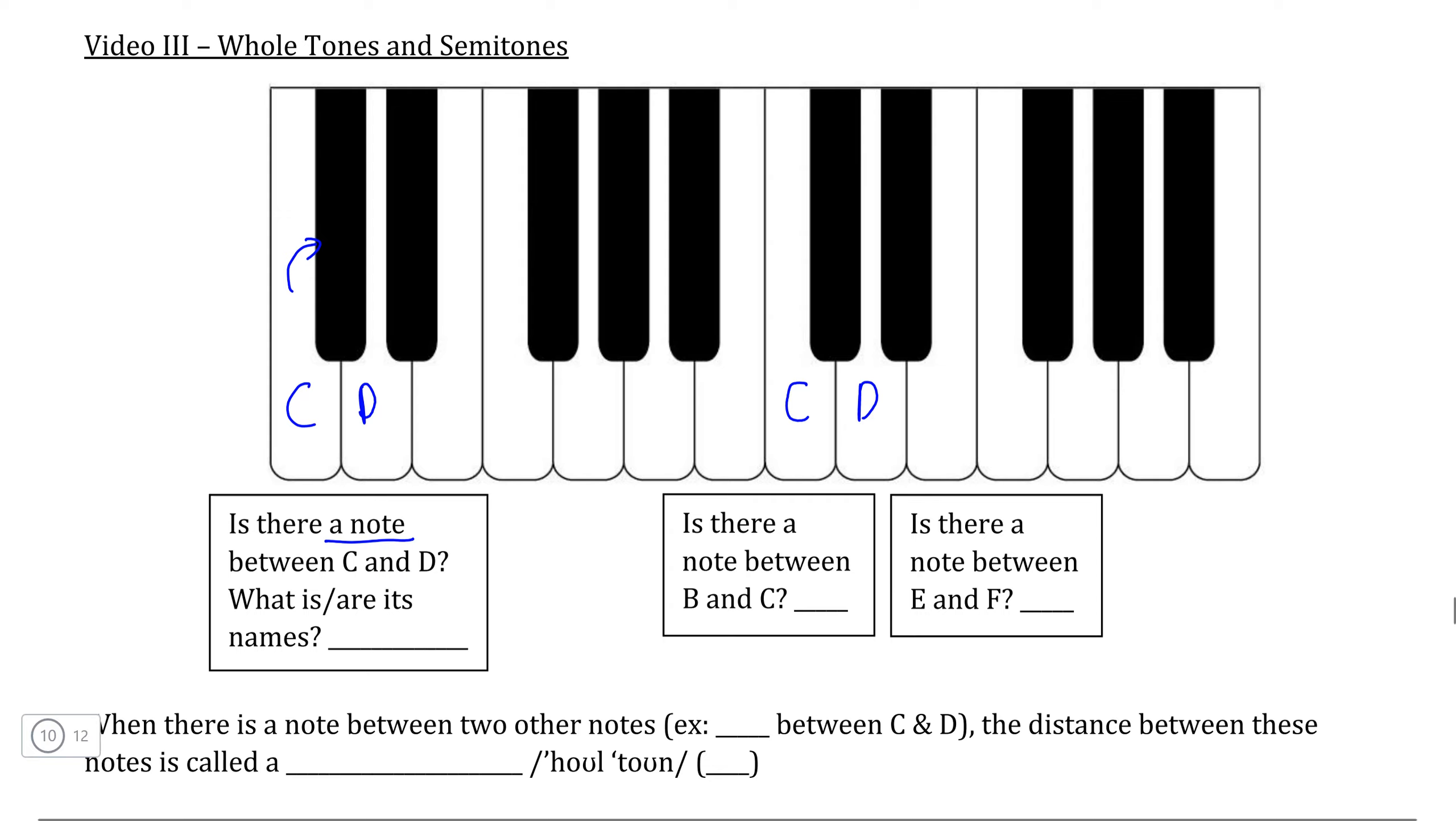So if we go up from C, we would call this black key C sharp, and if we go down from D, this black key would be known as D flat. So in the case of this part of our thought experiment, yes there is clearly a pitch in between C and D, we can call this C sharp, or we can call this D flat.